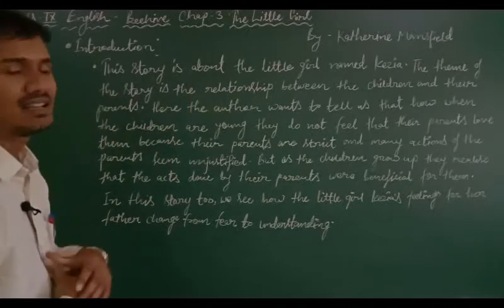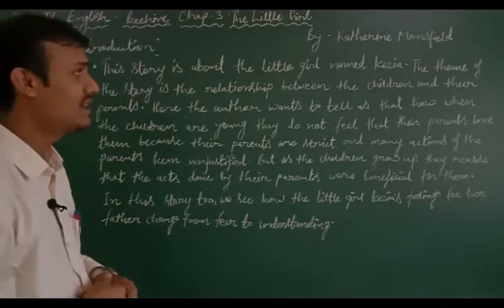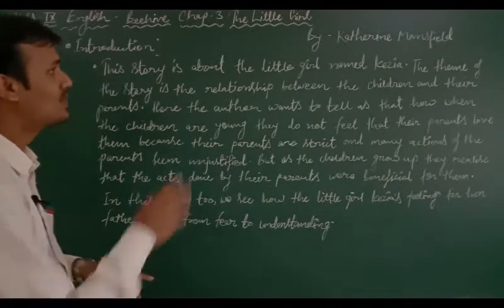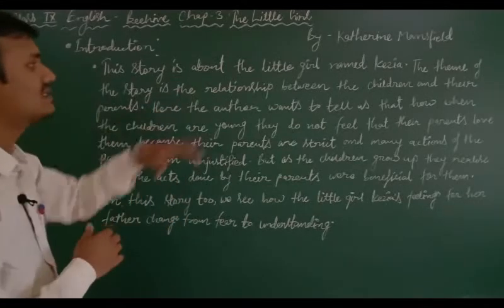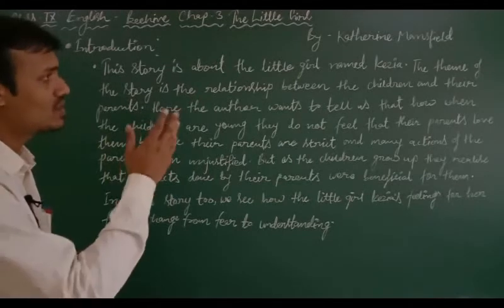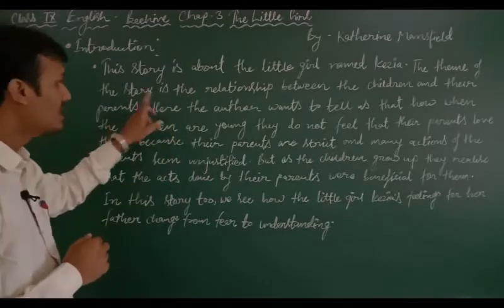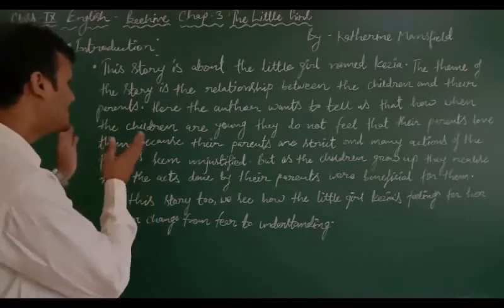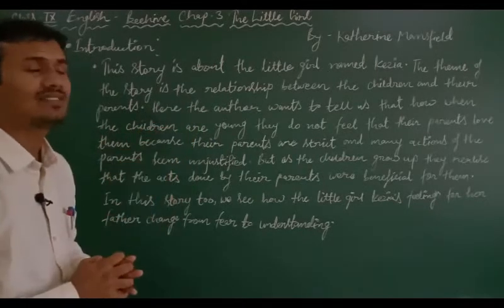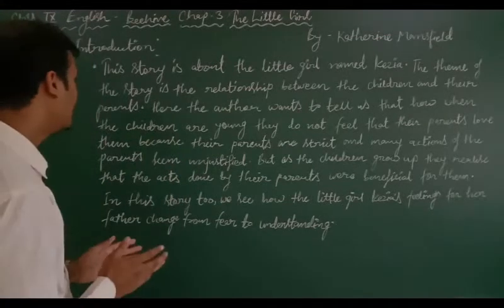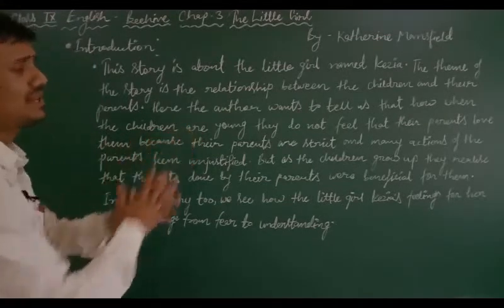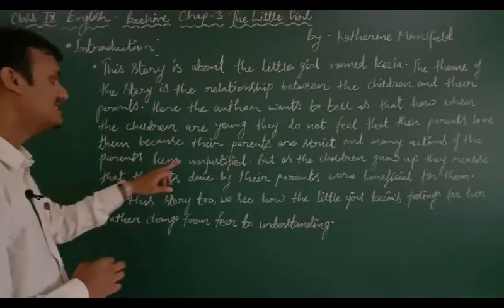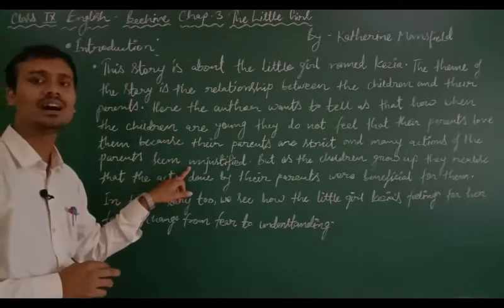This story is about a little girl named Kezia. The theme of this story is the relationship between children and their parents. Here the author wants to tell us that when children are young, they do not feel that their parents love them or care for them because their parents are strict, and many actions of the parents seem unjustified and unfair.